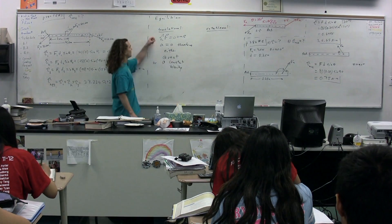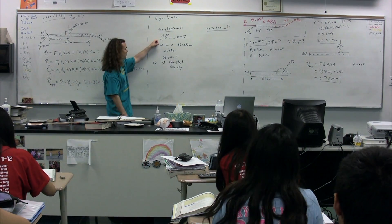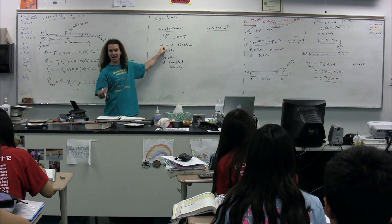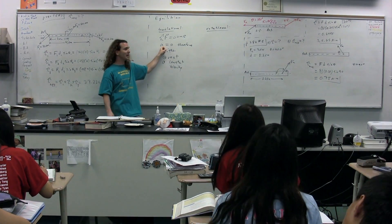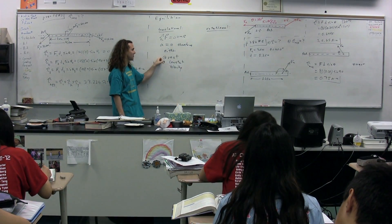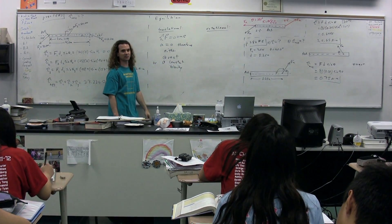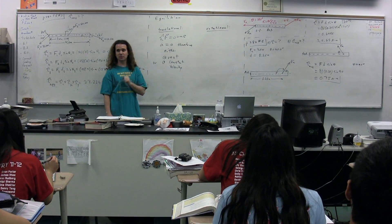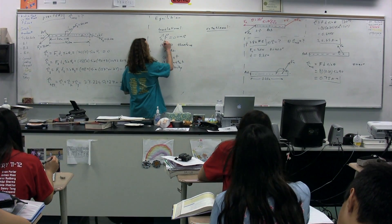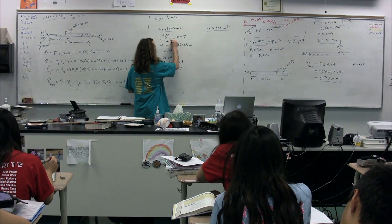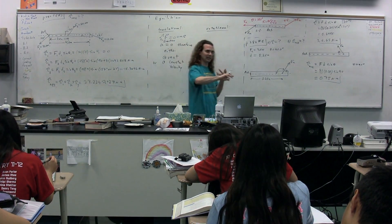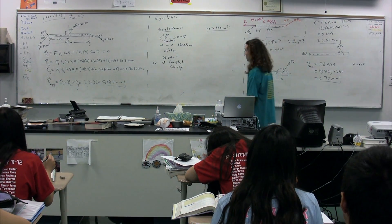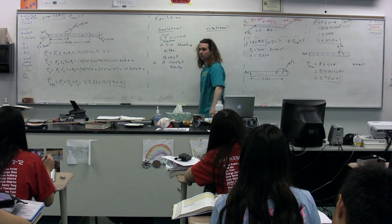So again, if an object is in translational equilibrium, the net force equals zero, the acceleration equals zero, and the velocity is not changing — meaning the object is either at rest or moving at a constant velocity. Whenever you sum the forces, you have to identify a direction: x, y, and so on. Translational equilibrium means net force equals zero.